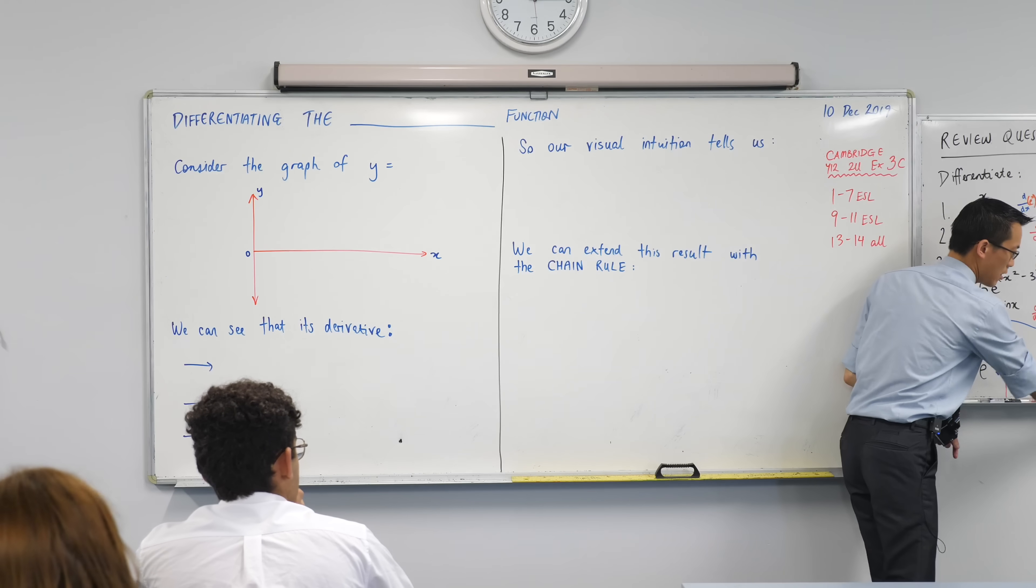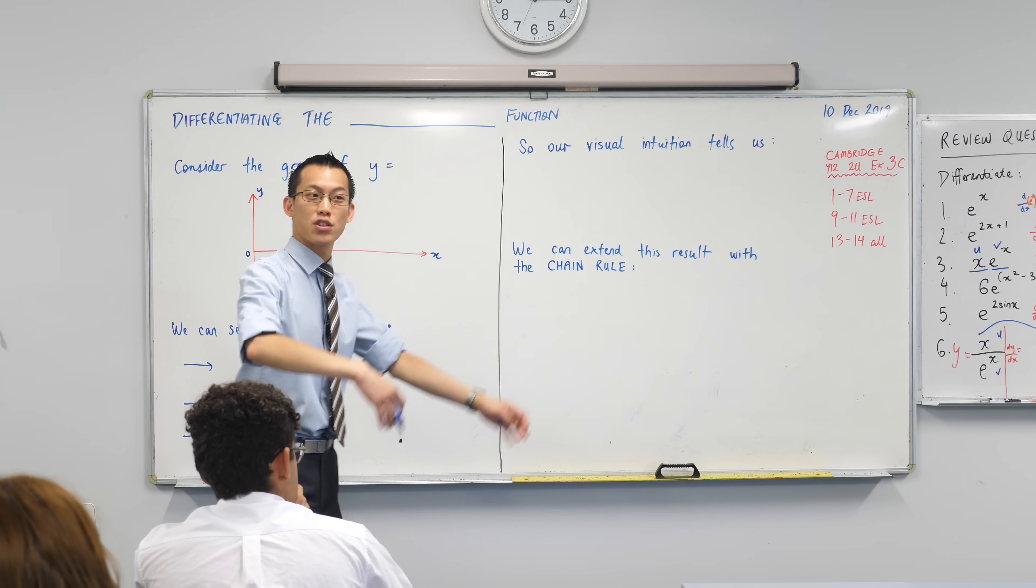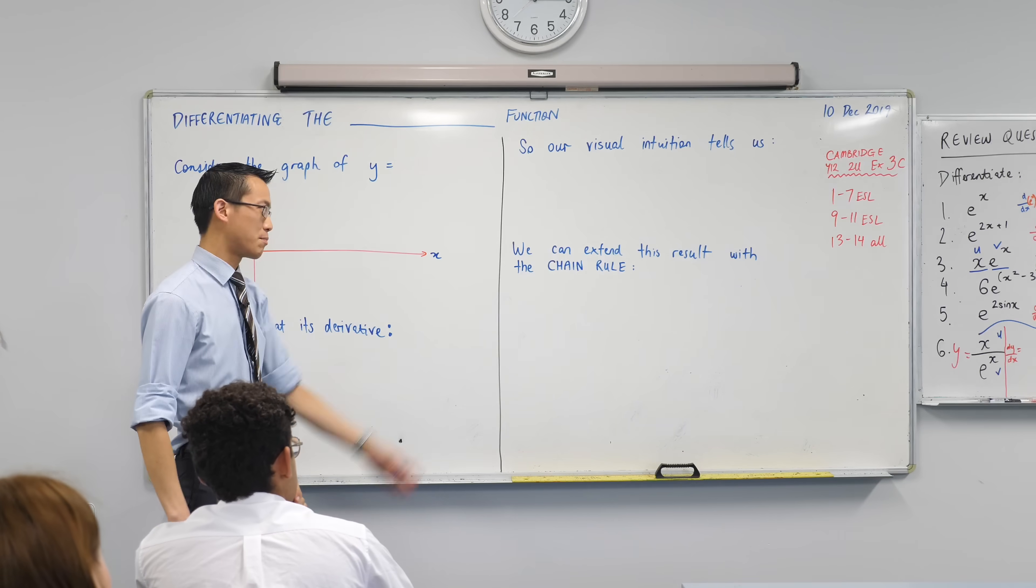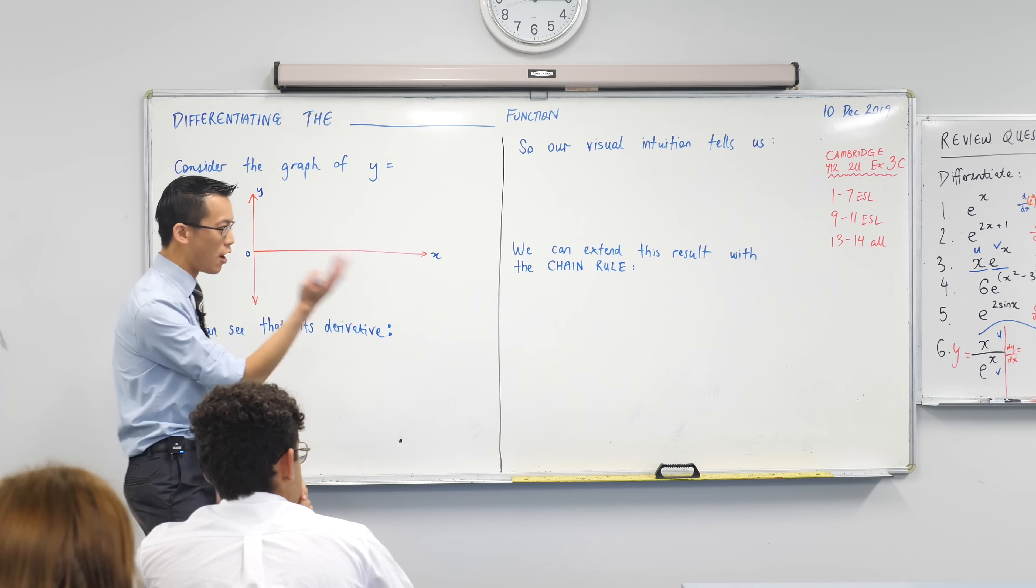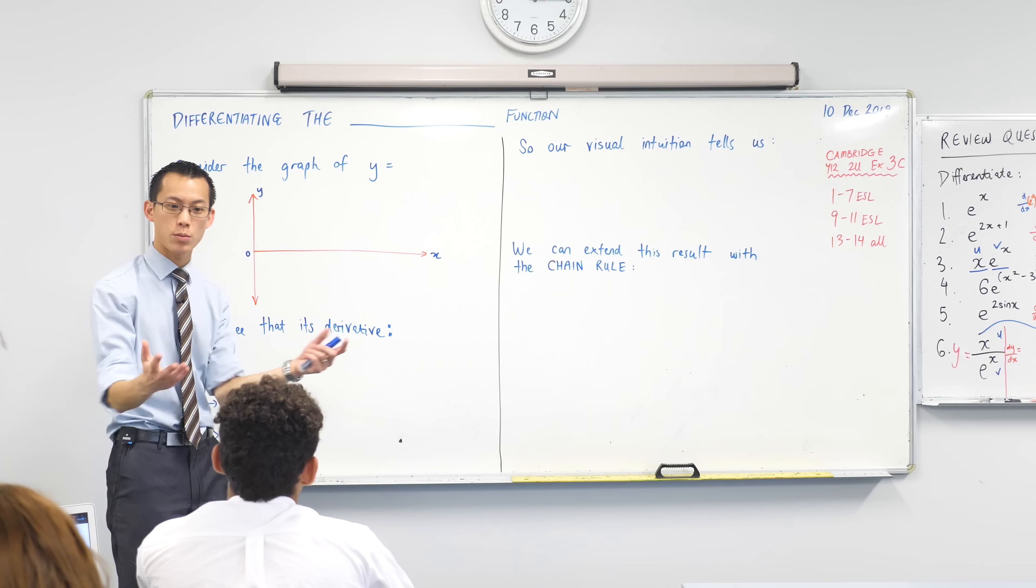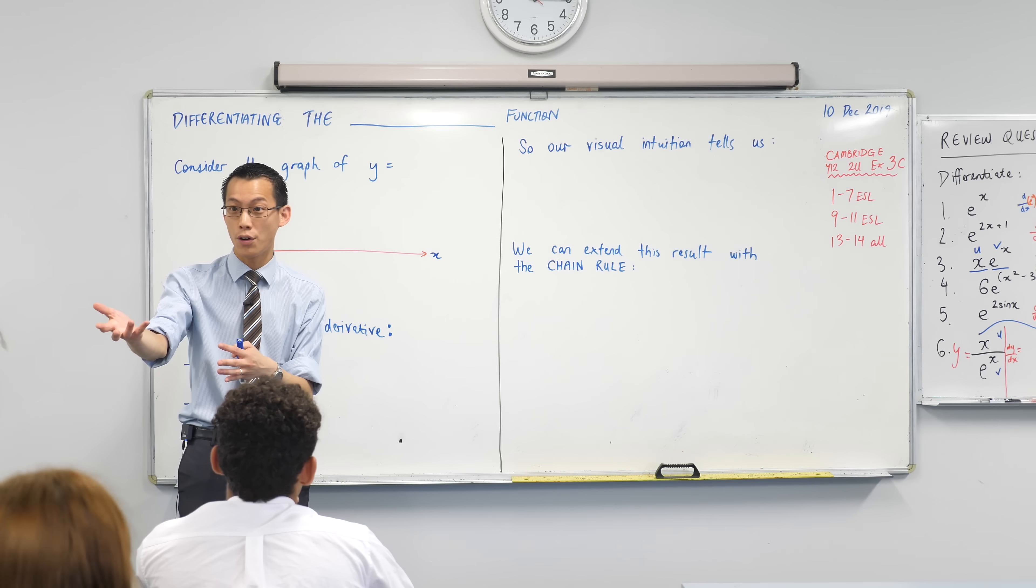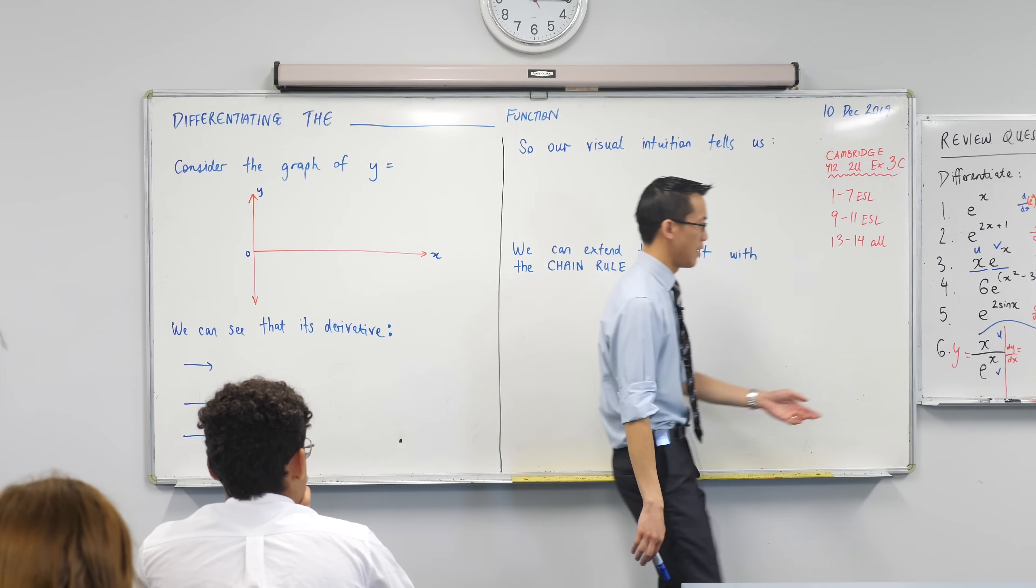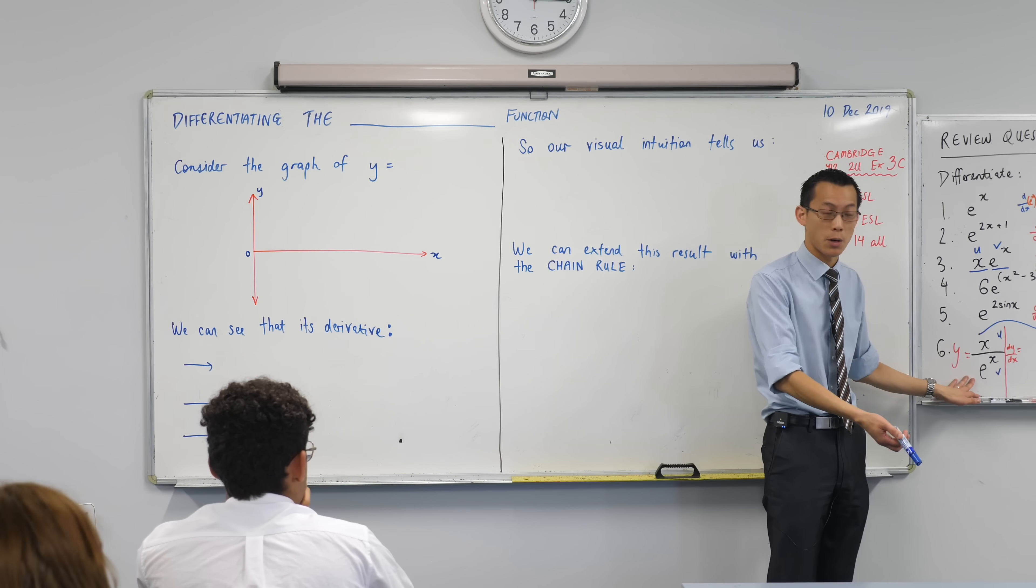Now this you don't need the quotient rule for at all. You can use the product rule and generally I will do everything I possibly can to avoid the quotient rule because it's gross. It works but it's long, it's error prone. When you do a test you're like I ran out of time - it's often not because you were slow, it's because you chose a method that took longer. Some methods are longer than others.